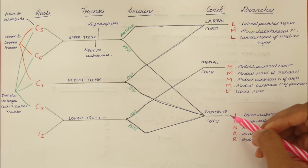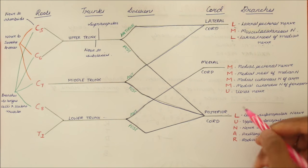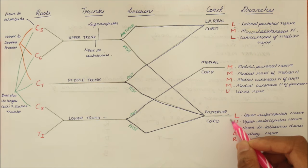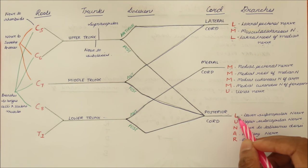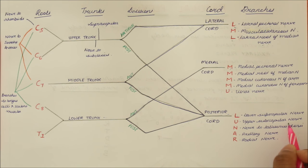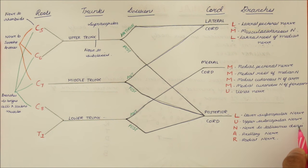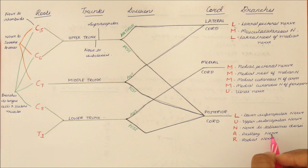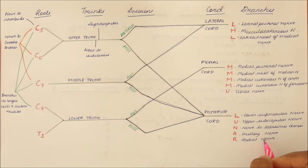The branches of the posterior chord can be remembered by the word LUNAR. L stands for the lower subscapular nerve, U stands for the upper subscapular nerve, N stands for the nerve to latissimus dorsi (also called the thoracodorsal nerve), A stands for the axillary nerve, and R stands for the radial nerve.